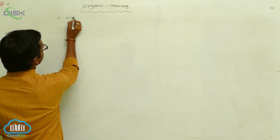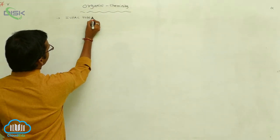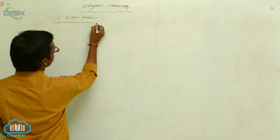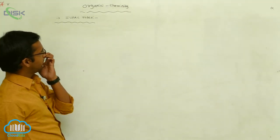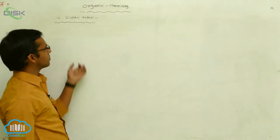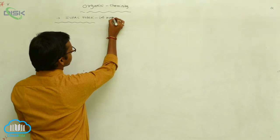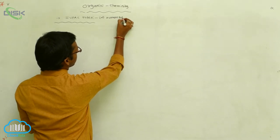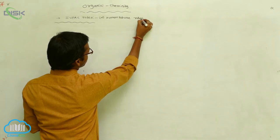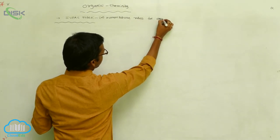IUPAC rules — International Union of Pure and Applied Chemistry — nomenclature rules. These are the nomenclature rules for organic compounds.